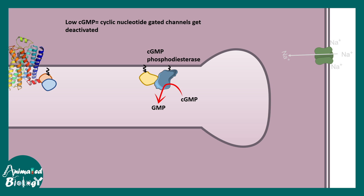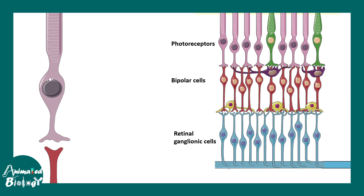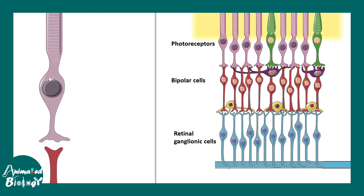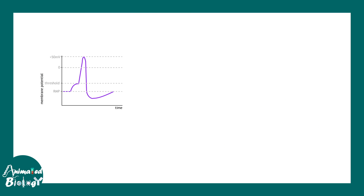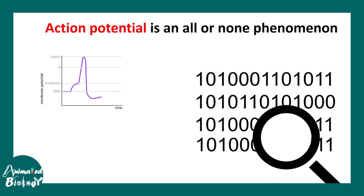Retinal cells are generally firing in darkness and inhibit firing when there is light. Light triggers hyperpolarization, not depolarization — so the neurons of the retina actually stop firing when light is present. This may seem counterintuitive, but visual information is still processed effectively.